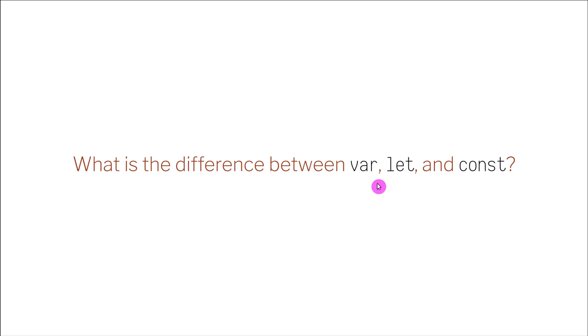If you look at JavaScript code, you may see three different ways of defining variables. First one is known as var, second one is let, and third one is const.